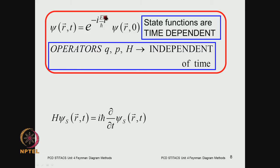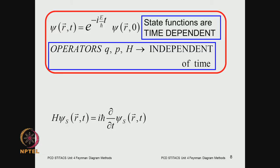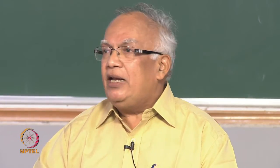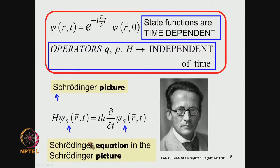In the Schrödinger picture, the entire time dependence is contained in the e^{−iEt/ℏ} term. The state function is time dependent while the operators — position, momentum, Hamiltonian — are composed of q and p and are completely independent of time. This is the signature of the Schrödinger picture: state functions are time dependent and operators are time independent. I have added a subscript S to emphasize this.